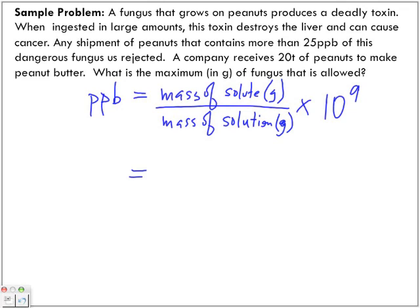We don't have the mass of solute. Any shipment of peanuts that contains more than 25 parts per billion is dangerous, so what is the maximum amount? 25 parts per billion. Mass of the solute, that's what we need to find. So what is the solute? The fungus.